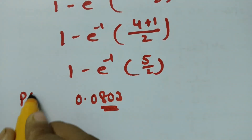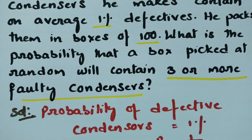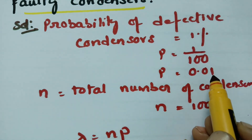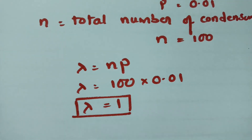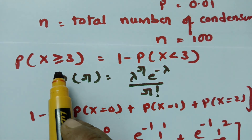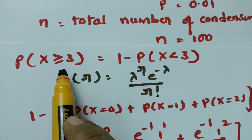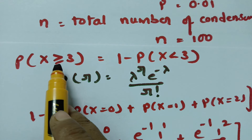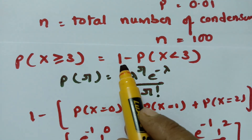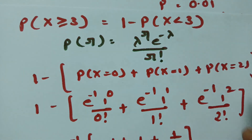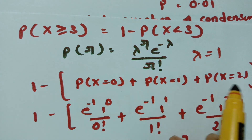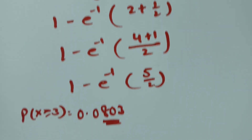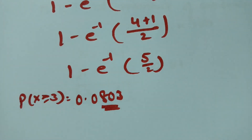So when a box is picked at random, the probability of getting 3 or more faulty condensers is 0.0803. Here p equals 0.01, n equals 100, lambda equals n times p equals 1. Since it is difficult to find probability from 3 upward directly, we calculate 1 minus probability of x less than 3, substituting r equals 0, 1, and 2 in the formula. The answer is 0.0803. Thank you so much.